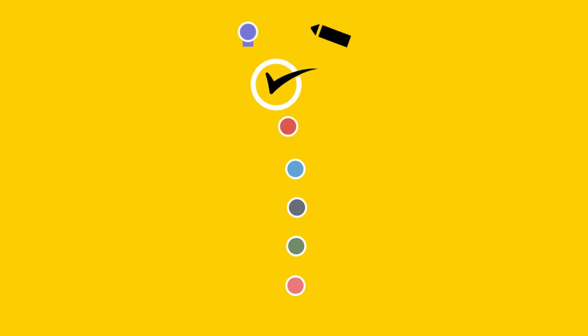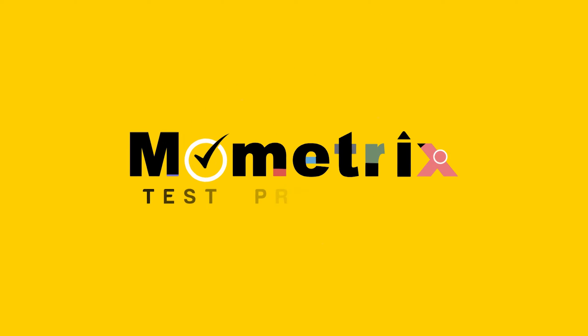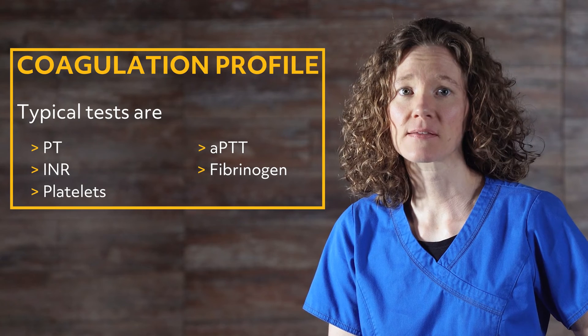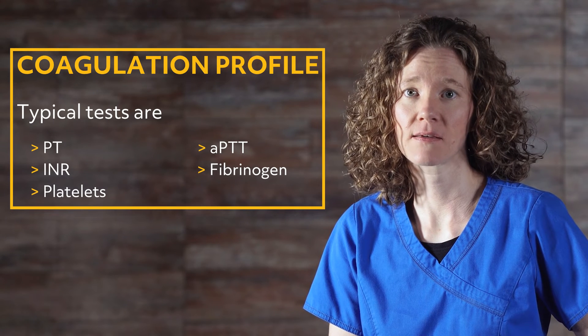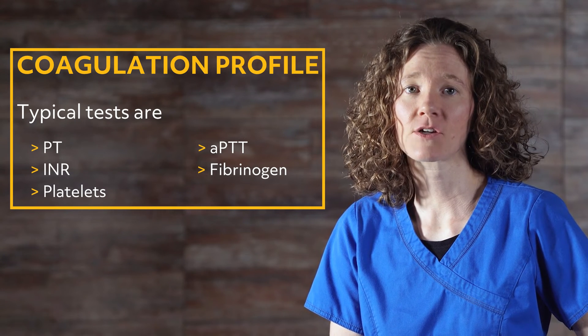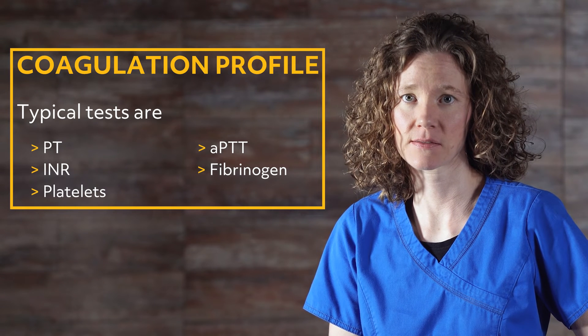Welcome to this video on coagulation profiles. A coagulation profile can include a number of blood tests that tell clinicians information about the clotting ability of blood. Typical tests done are called PT, APTT, INR, fibrinogen, and platelets.